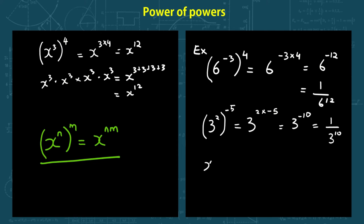What if we have x to the power of negative 2, raised to the power of negative 3? This will be equal to x to the power of negative 2 times negative 3, which becomes positive — so that's x to the power of 6.